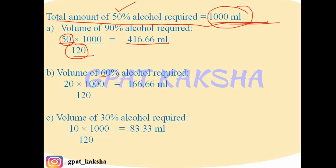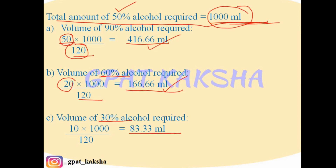For 60% alcohol: from the allegation method, 20 parts out of 120 are required, so (20/120) × 1000 = 166.66 ml. For 30% alcohol: 10 parts out of 120 are required, so (10/120) × 1000 = 83.33 ml. These are the volumes of 90%, 60%, and 30% alcohol required in the preparation.